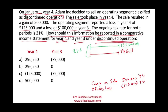The first thing we have to be aware of is that everything has to be reported under discontinued operations net of tax. In Year 4, we are going to report the gain and the loss separately. If I take the gain of $500,000 minus the loss of $125,000, we have a net gain between selling the business and operating the business of $375,000.